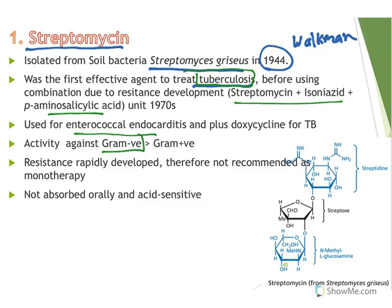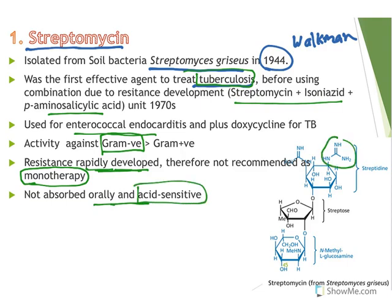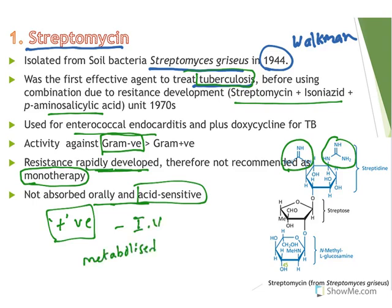The problem with streptomycin is that resistance develops rapidly, which is why it is not recommended as monotherapy. It is not absorbed orally and is acid sensitive. Streptomycin has guanidino groups, which are strongly basic and develop a positive charge, so it cannot be absorbed orally. It is water soluble and being a polar compound must be given intravenously. It is not metabolized much and is excreted unchanged due to its water solubility.